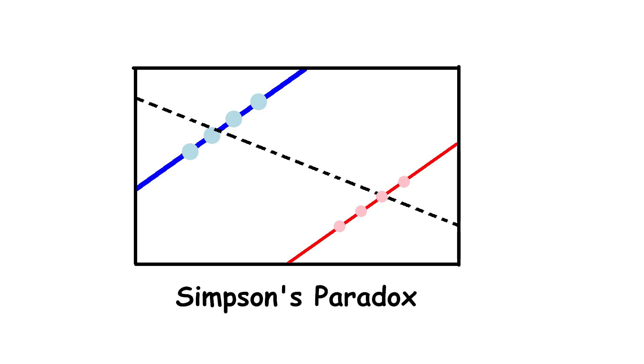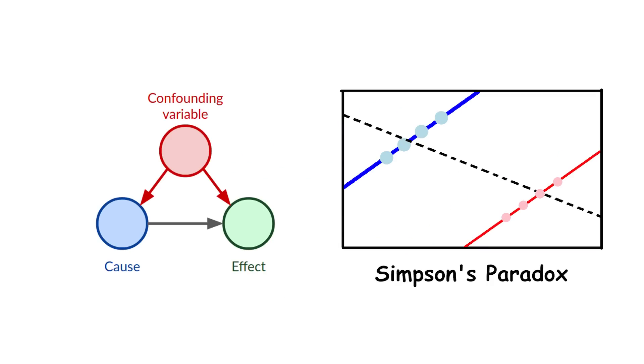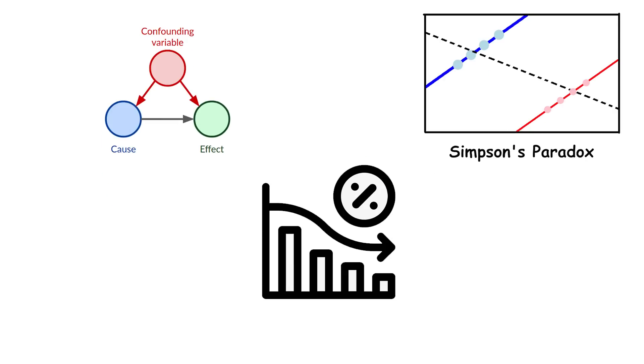The paradox happens because of a third variable, called a confounder, which affects the two groups differently. In this case, the third variable could be something like the severity of the disease, which might vary between males and females, affecting the overall survival rates.